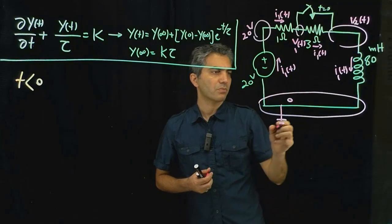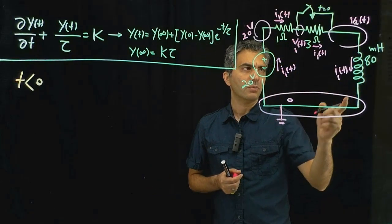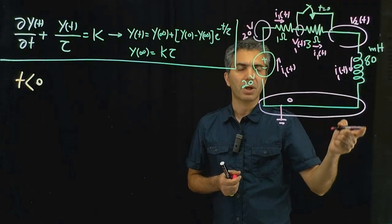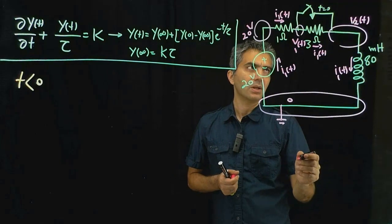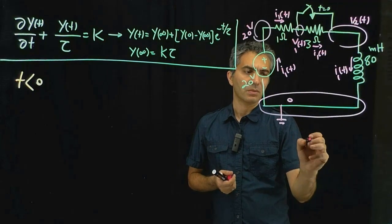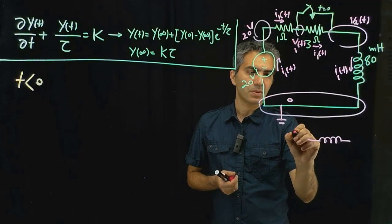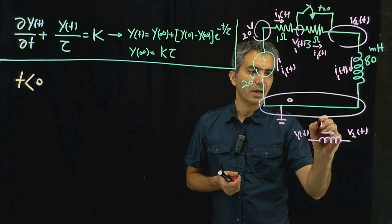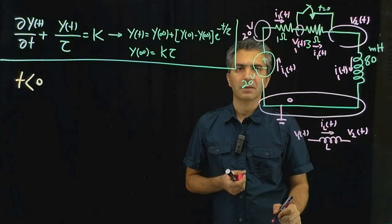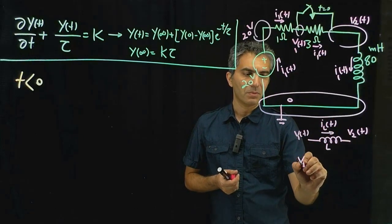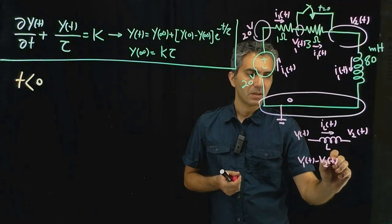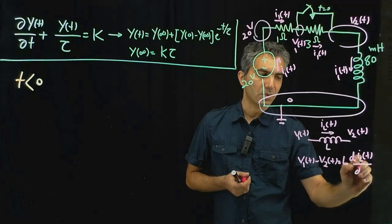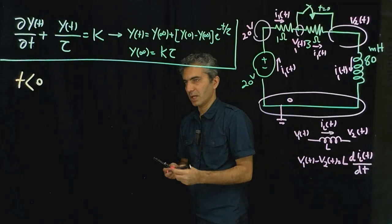We remind ourselves that the equation for the inductor is: the voltage across the inductor equals the inductance multiplied by the derivative of the current with respect to time. For a general case, if V1(t) and V2(t) are the terminal voltages and ILt is the current through an inductance L, then V1(t) minus V2(t) equals L times dIL/dt.